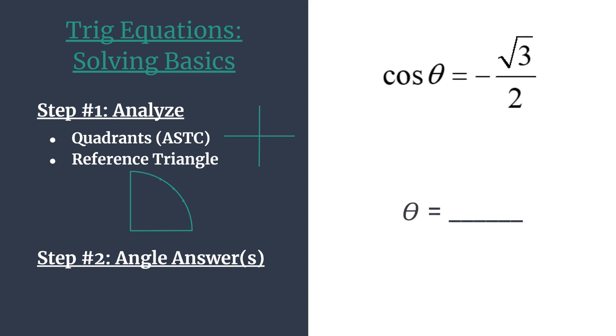Again, we're doing this for the equation cosine theta equals negative square root 3 over 2. So we start with step 1, analyzing and deciding which quadrants we should be working in. What you want to do is think about the acronym ASTC, or all students take classes is a good way to remember that. And this acronym tells you which trig functions are positive in each quadrant.